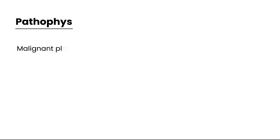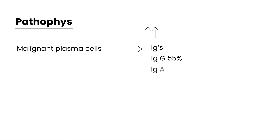Let's talk about the pathophysiology of multiple myeloma. Essentially, you have these malignant plasma cells, and they produce large quantities of immunoglobulins — IgG about 55% of the time, IgA about 20% of the time, and others as well. These immunoglobulins go on to destroy bone, resulting in osteoporosis.